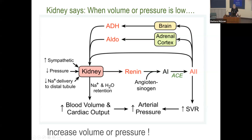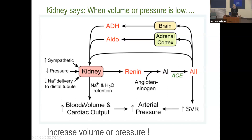The adrenal gland sits on top of the renal organ and releases aldosterone. The brain also releases antidiuretic hormone (ADH), also known as vasopressin. The three primary hormones released to control volume and pressure in the kidney are: ADH, aldosterone, and renin (which converts to angiotensin II). The heart itself promotes diuresis by releasing BNP.